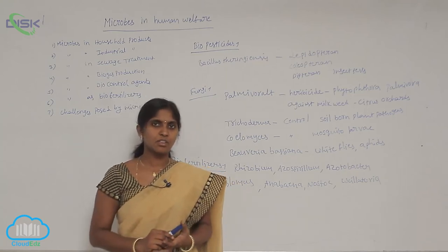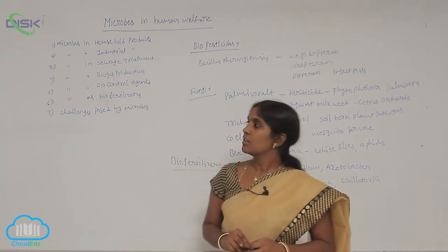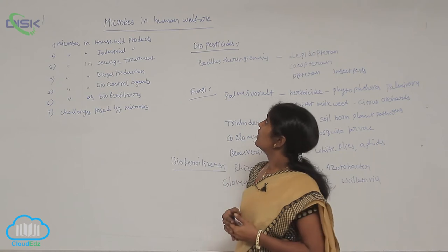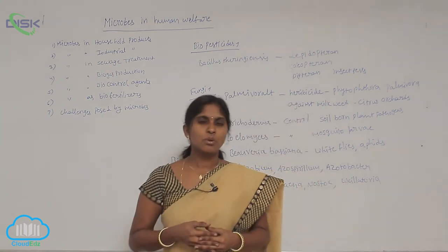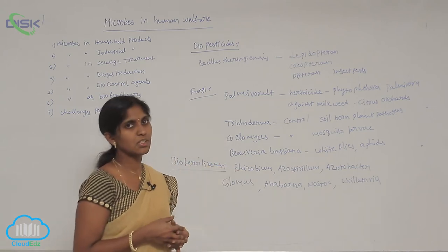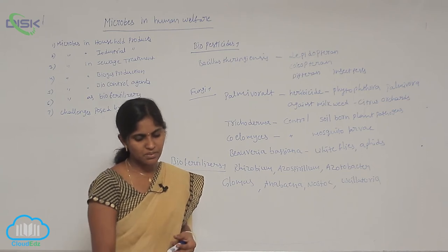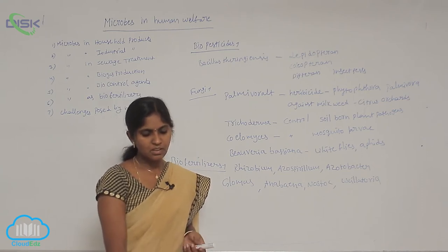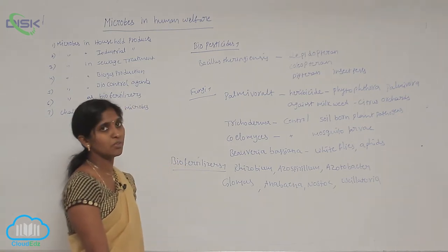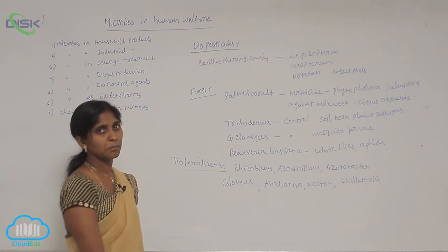The role of microorganisms as biocontrol agents — biopesticides. What are biopesticides? Biopesticides are compounds which are harmful to pests, released from microorganisms. They are called biopesticides because they are obtained from living organisms, especially microorganisms such as bacteria, fungi, and mycoplasma.